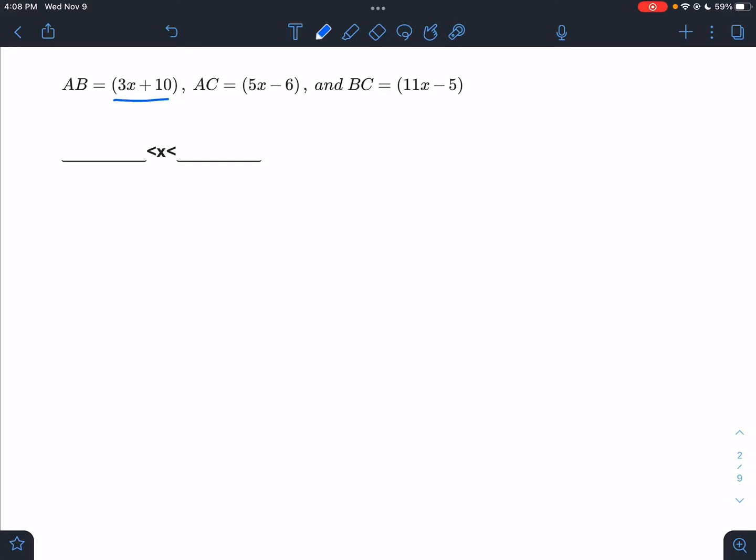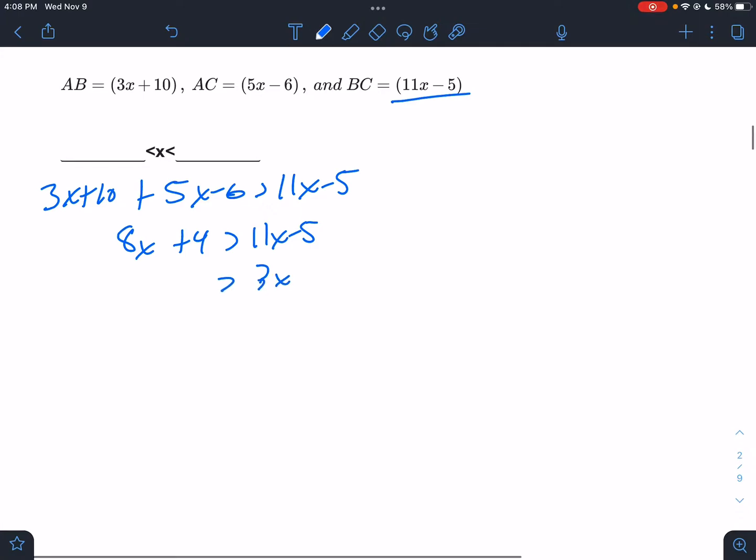So if that's the biggest, make that the biggest one. So 3x + 10 plus 5x - 6 has to be greater than 11x - 5. That must be true. Let's solve this out. That would be 8x + 4 must be greater than 11x - 5.